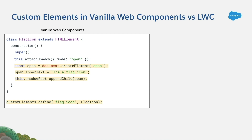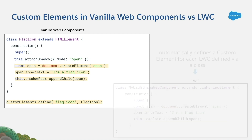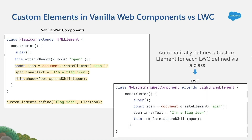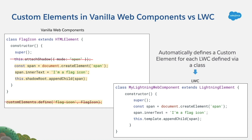So, how do you do this in Lightning Web Components? Well, super easy, because the framework is going to automatically define a custom element for each Lightning Web Component that is defined via a class that extends Lightning Element. Lightning Element is no more than an extension of the HTML element standard class. As you can see, we can forget both about attaching the shadow tree, and also about defining the custom elements, because Lightning Web Components is going to do that for us.